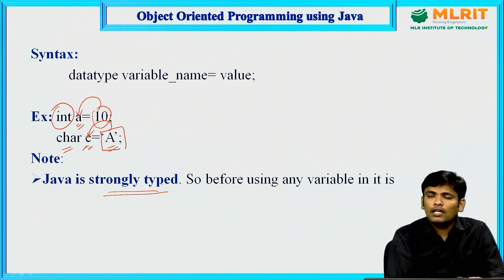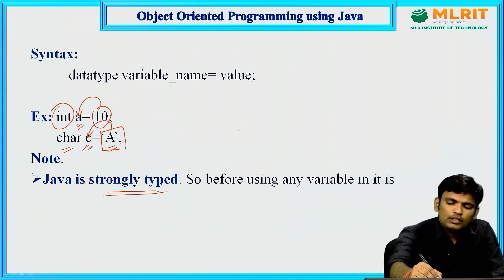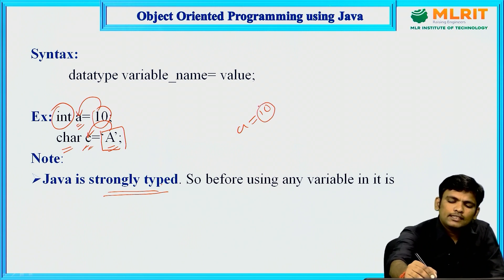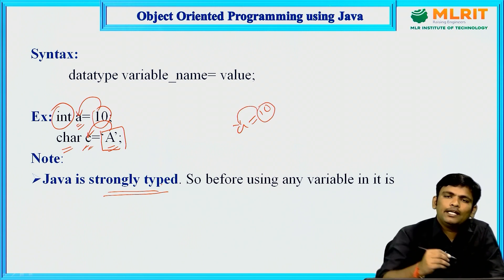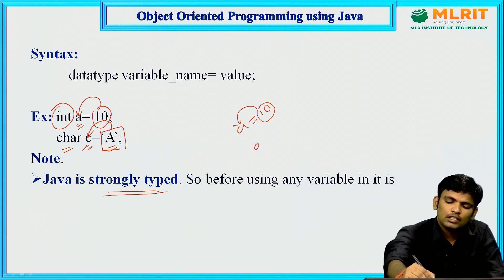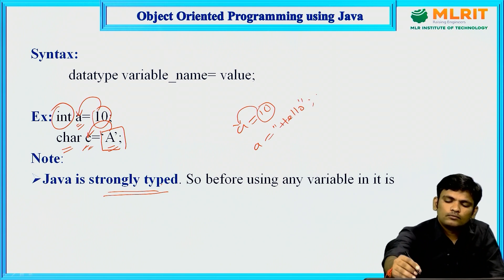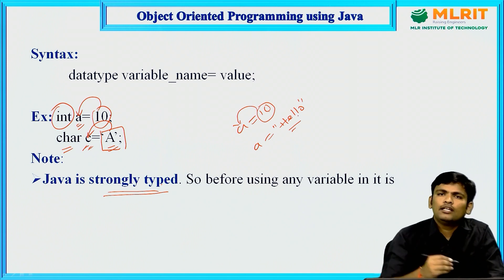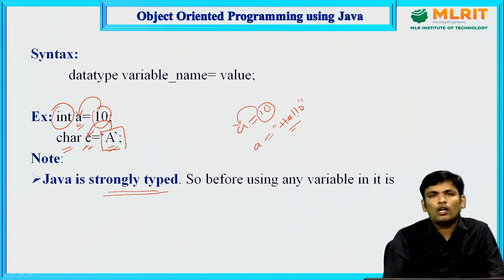Python is a dynamically typed programming language. If you write a = 10, the type of a is decided based on the R value — dynamically. If you then write a = 'hello', a is now pointing to a string. So in Python, the type is decided dynamically, but Java is a strongly typed programming language.